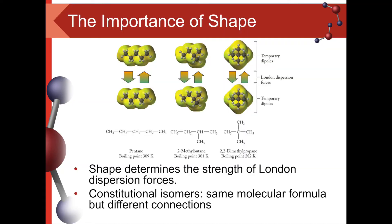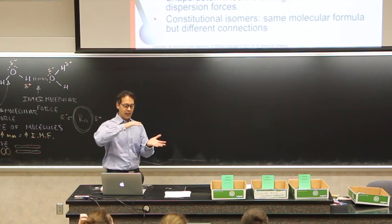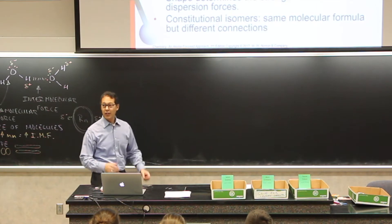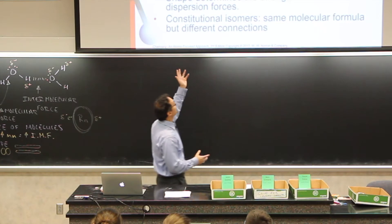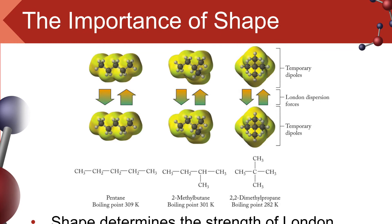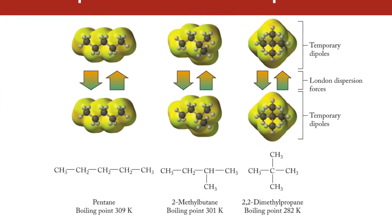Shape is also important in intermolecular forces. Here we have three molecules with roughly the same molar mass. On the left is pentane, and it has the highest boiling point because pentane has a kind of linear, flat molecule with lots of surface area to come in contact. Over here we have 2,2-dimethylpropane — less surface area to come in contact, so it's going to be less sticky.